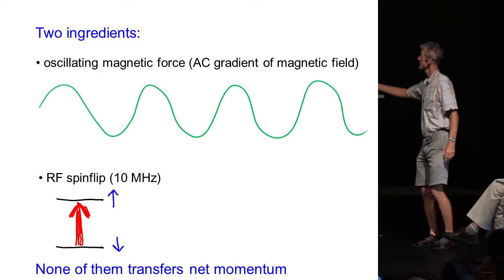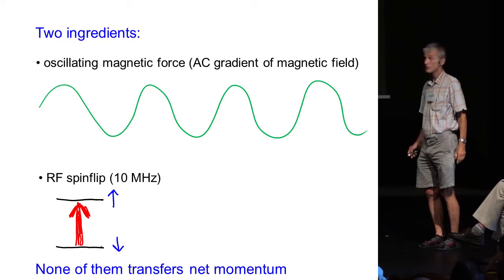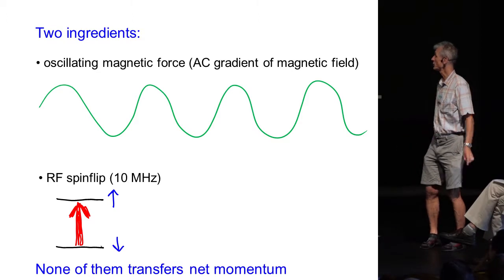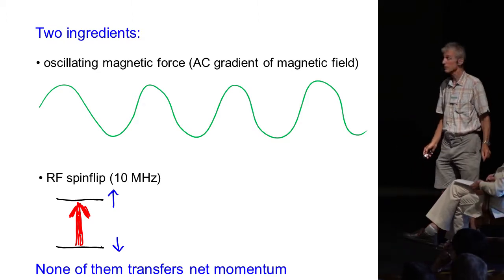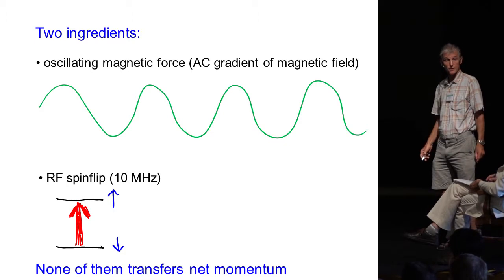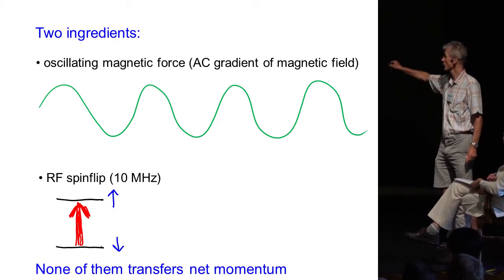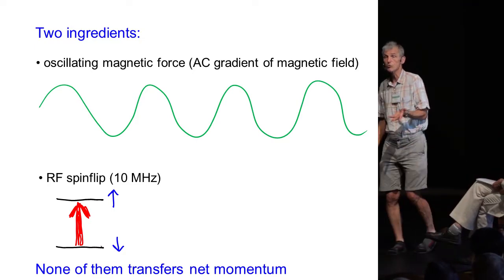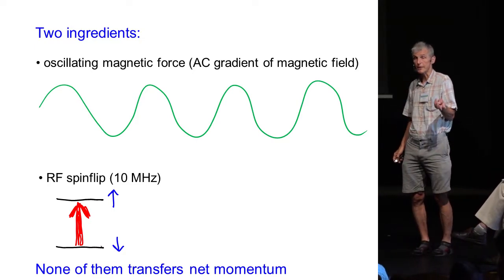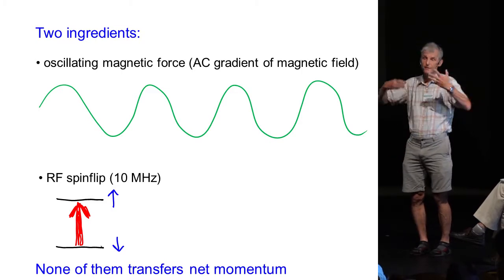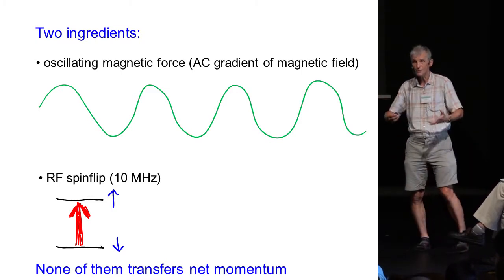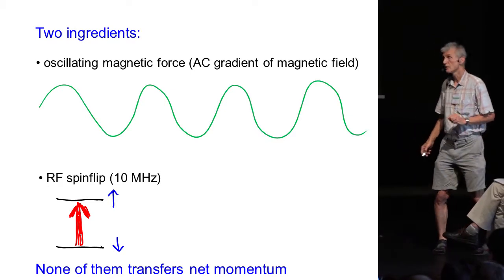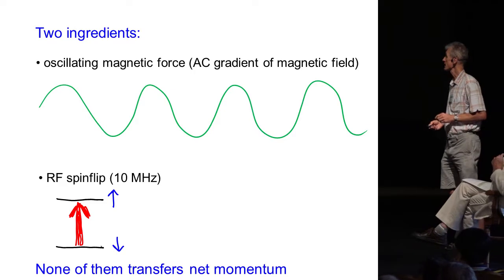The whole scheme has two ingredients. It has an oscillating magnetic force, an AC gradient of the magnetic field and it has an RF spin flip at around 10 megahertz. And now none of them transfers momentum because here the force is periodic and an RF photon has such a low frequency that the momentum transfer of the photon is completely negligible.